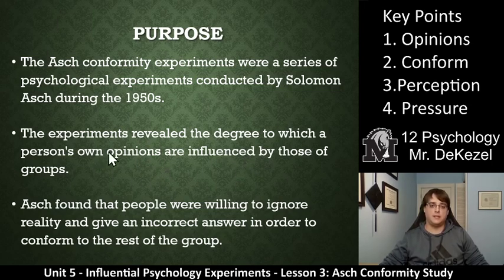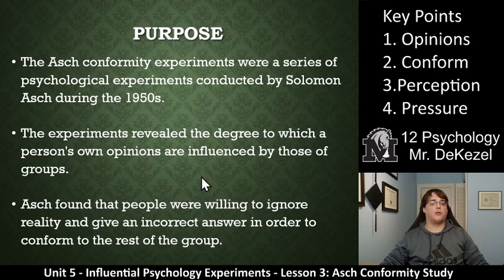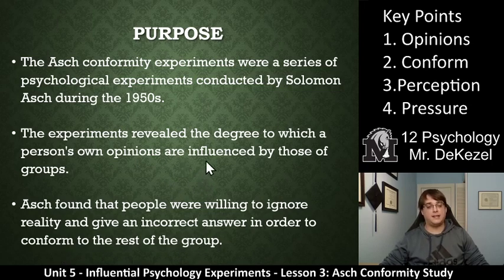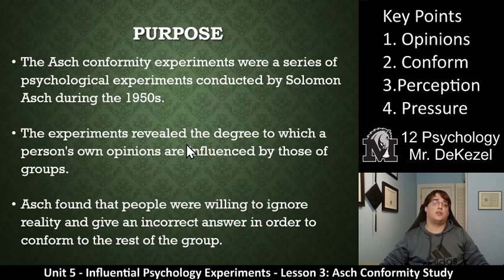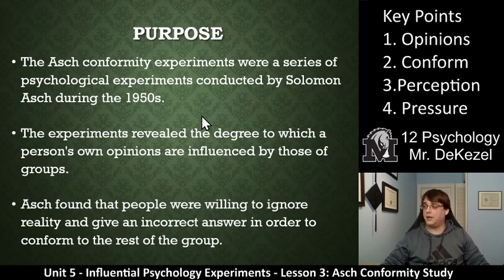So key point one is opinions. Are your opinions influenced by those in the group? Asch found that people were willing to ignore reality and give an incorrect answer in order to conform to the rest of the group — to be the same as the rest of the group. They ignored reality, they ignored what they thought, and just went with the group. And it's a very simple experiment that showed how this works.